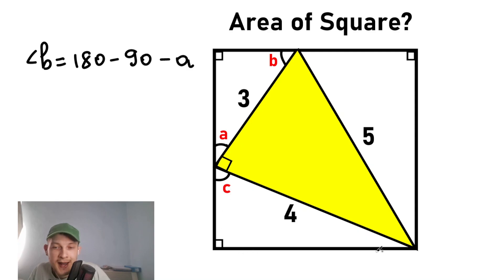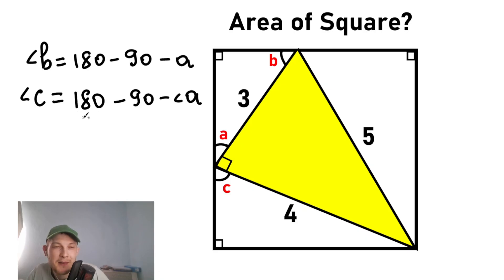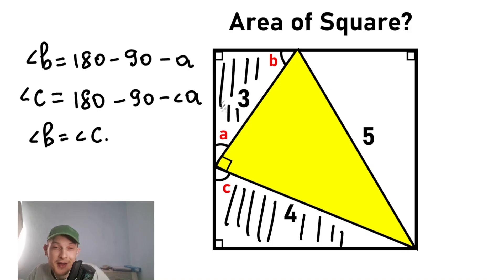Right now let's consider the bottom triangle — there will be really interesting moments, so just look at it. Our angle C equals 180 degrees minus our right angle, 90 degrees, minus angle A. If you look closely, we have absolutely the same expression for the top and the bottom. So angle B equals angle C, meaning the bottom triangle is similar to the top left triangle, according to the two equal angles.